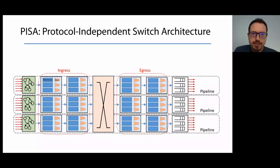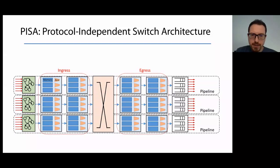The reason why there are multiple pipelines is that with current technology, clock speeds are not high enough to process the required number of packets. So multiple pipelines can process multiple packets in parallel, independently, with no state sharing among pipelines.